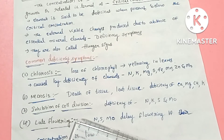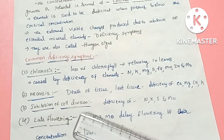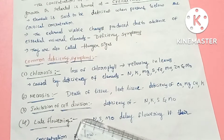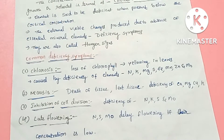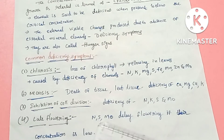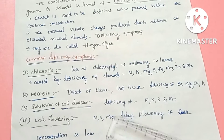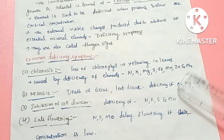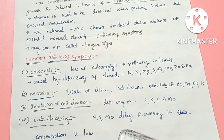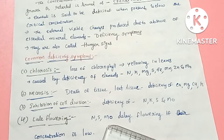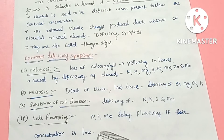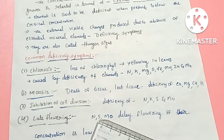The next symptom is late flowering. When elements such as nitrogen, sulfur, and molybdenum become deficient, flowering is delayed. Deficiency of these elements causes a delay in the flowering of plants. These are some of the key deficiency symptoms.